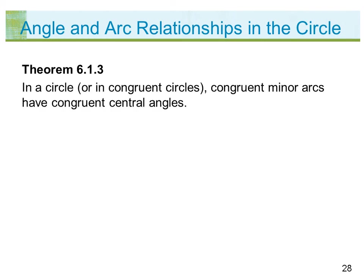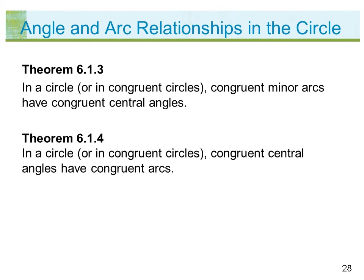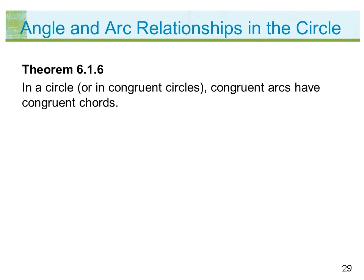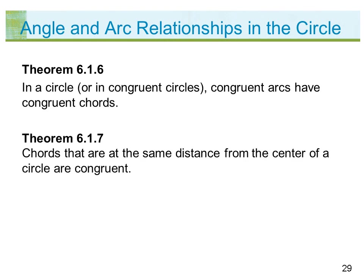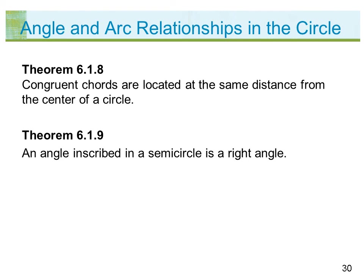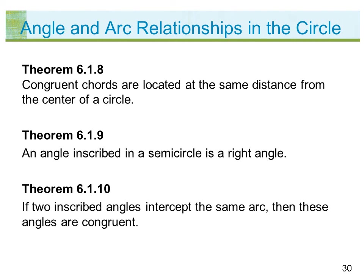Theorem 6.1.3: in a circle or in congruent circles, congruent minor arcs have congruent central angles. Theorem 6.1.4: in a circle or in congruent circles, congruent central angles have congruent arcs. Theorem 6.1.5: congruent chords have congruent minor or major arcs. Theorem 6.1.6: congruent arcs have congruent chords. Theorem 6.1.7: chords at the same distance from the center of a circle are congruent. Theorem 6.1.8: congruent chords are located at the same distance from the center. Theorem 6.1.9: an angle inscribed in a semicircle is a right angle. Theorem 6.1.10: if two inscribed angles intercept the same arc, then these angles are congruent.